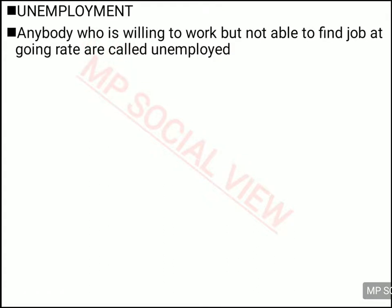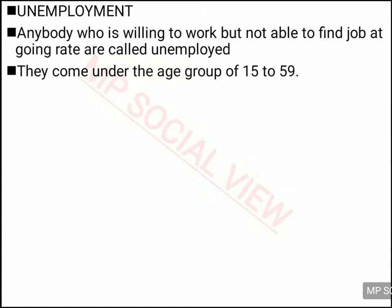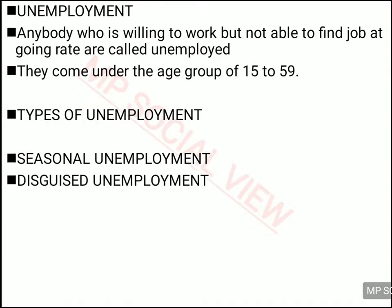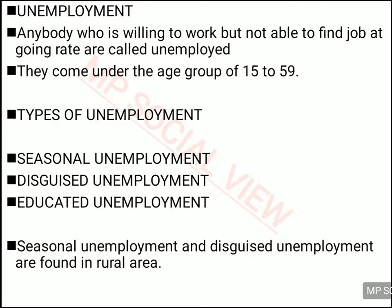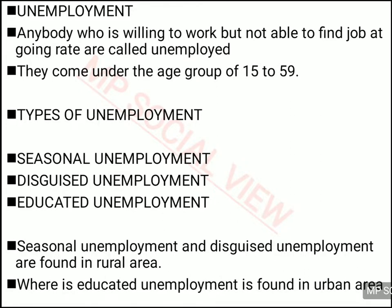Now let us see about unemployment. Unemployment is a situation in which a person is willing to work but is unable to find a job. This problem mainly affects people belonging to the age group of 15 to 59 — below 15 you are a child studying, and after 59 you generally get retirement. There are various types of unemployment: seasonal unemployment, disguised unemployment, and educated unemployment. The first two are basically found in the rural area, and educated unemployment is found in the urban area.